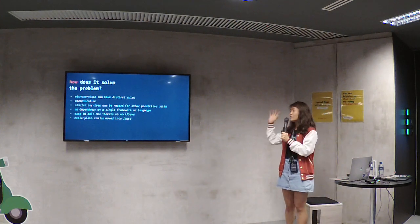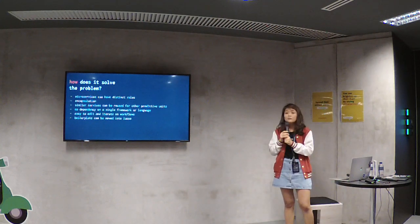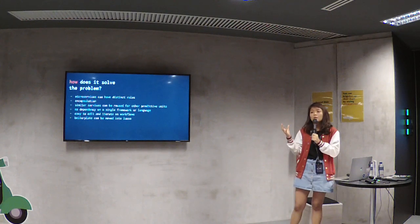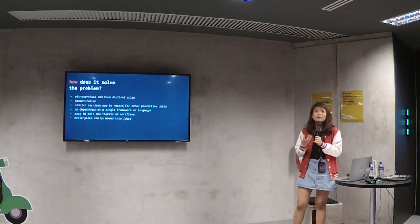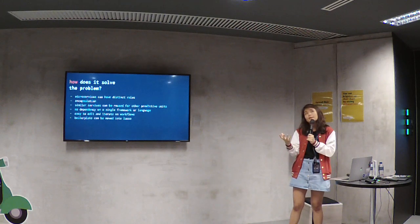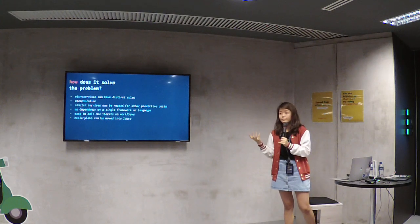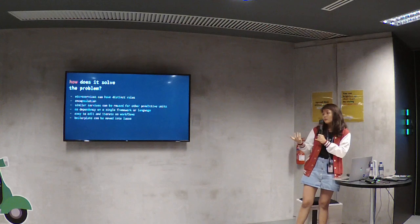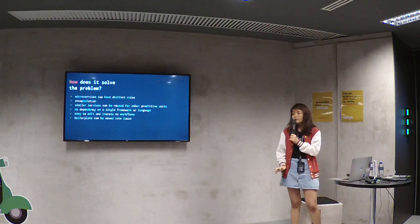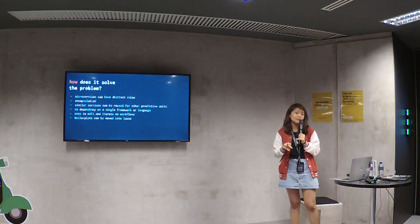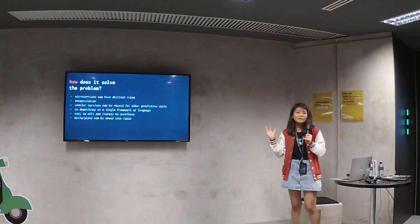So how does this whole thing solve the problem? Next to Lasso, microservices can have distinct roles. You don't have to have a microservice do a bunch of things in a mediocre way. You can write a service that processes data in a language that processes data well — for instance, Python. And there's also encapsulation: the microservices don't necessarily have to know about each other. Only Lasso knows about them, so they can basically not care about the world around them.